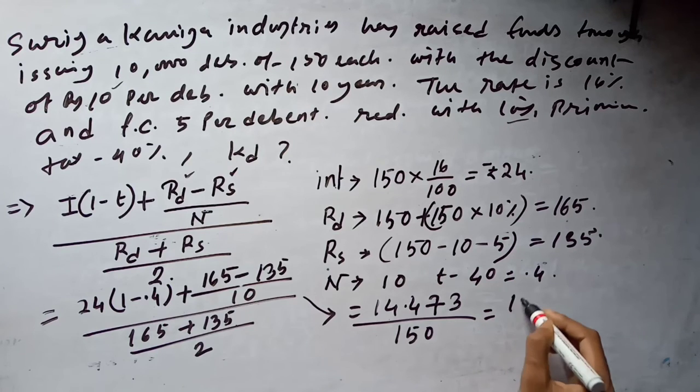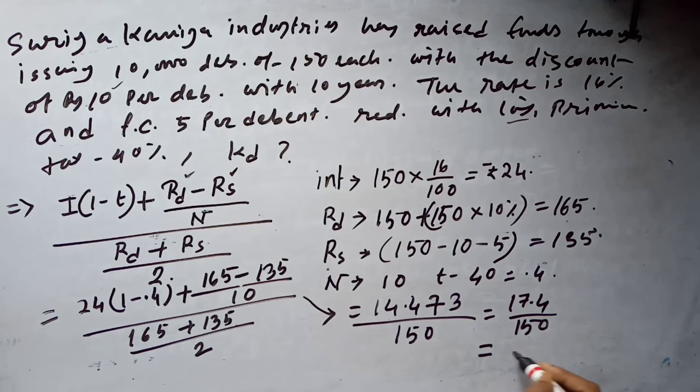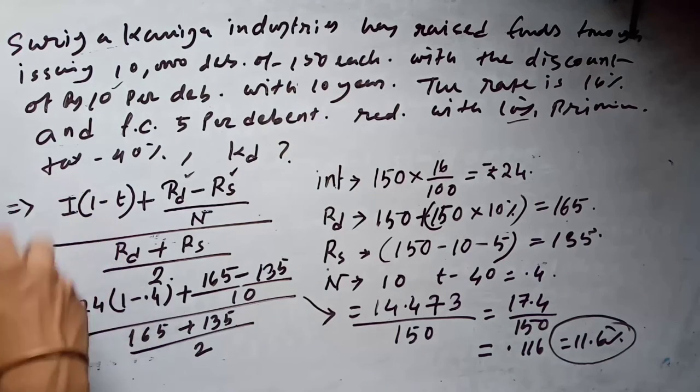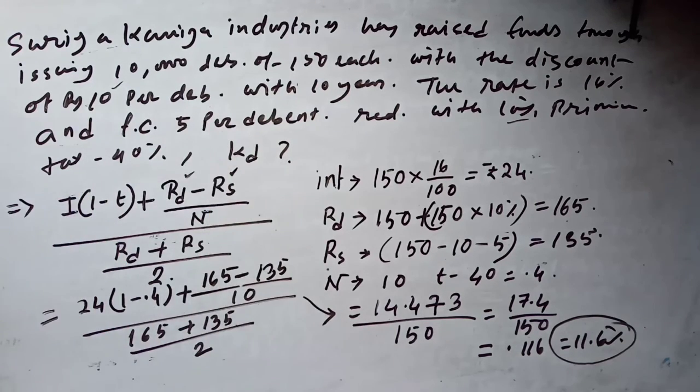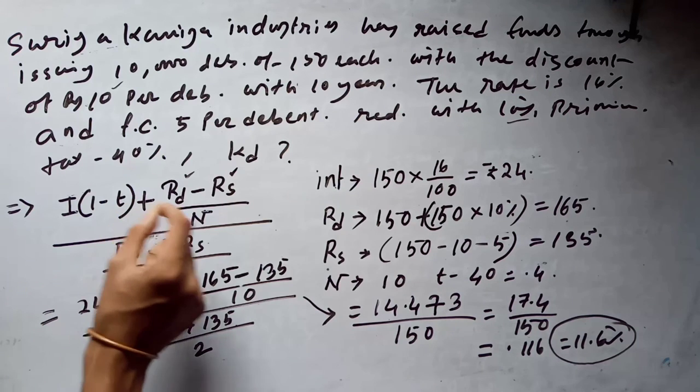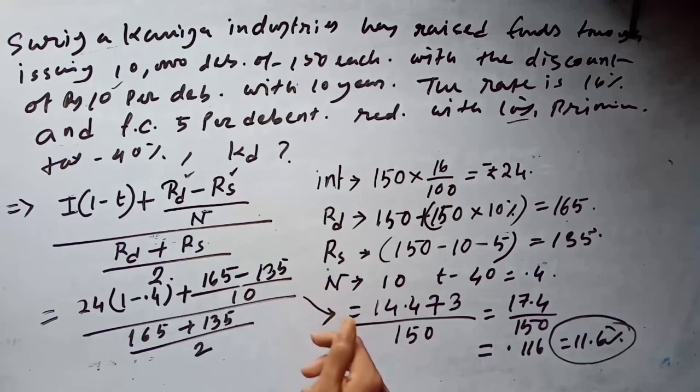So 17.4 by 150, which is 0.116 or 11.6%. The cost of debt—so this is the answer for cost of debt. The formula is very, very easy, and if you calculate each data of the given formula, you will easily find out the cost of debt. That's it for today's video. Thank you.